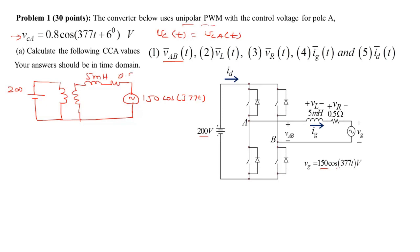The resistance is 0.5 ohms. The key part is to write the turns ratio, which is 1 to Vc(t) — a time-varying turns ratio. Vc is the same as Vca, which is given in the problem statement. The voltage Vab-bar is the average model quantity, so all quantities are cycle-by-cycle averages. The current flowing is Ig-bar, and the DC current average is Id-bar.